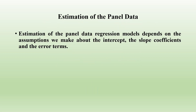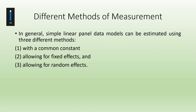The estimation of panel data regression models highly depends on the assumptions we make about the intercept, the slope coefficients and the error terms. In general, simple linear panel data models can be estimated using three different methods: one, with a common constant; second, allowing for fixed effects; third, allowing for random effects.